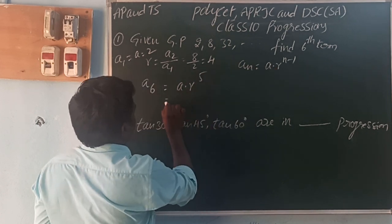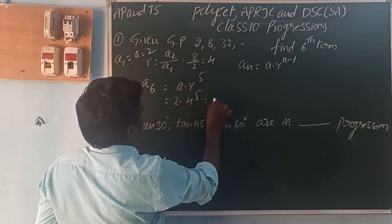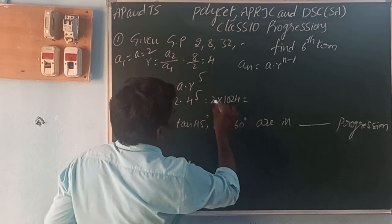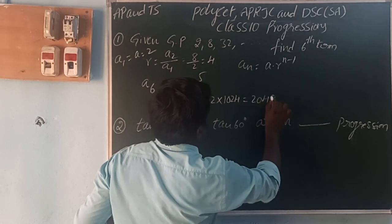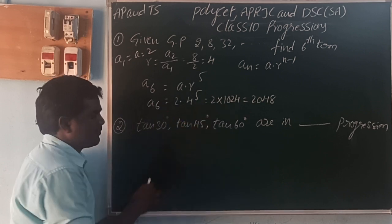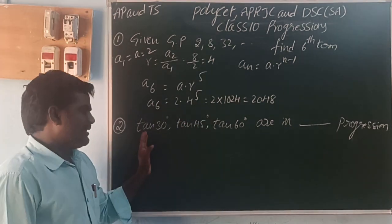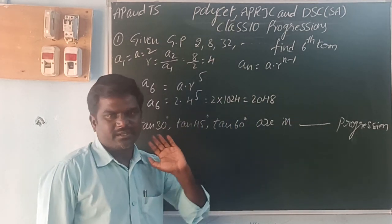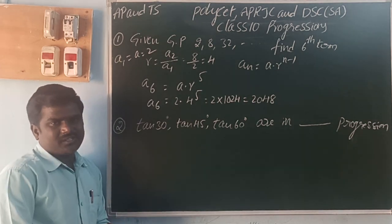6 minus 1 is 5, so A is 2, R is 4 power 5. 2 into 4 power 5 is 1024. 2 into 1024 is 2048. So the sixth term of GP is 2048.